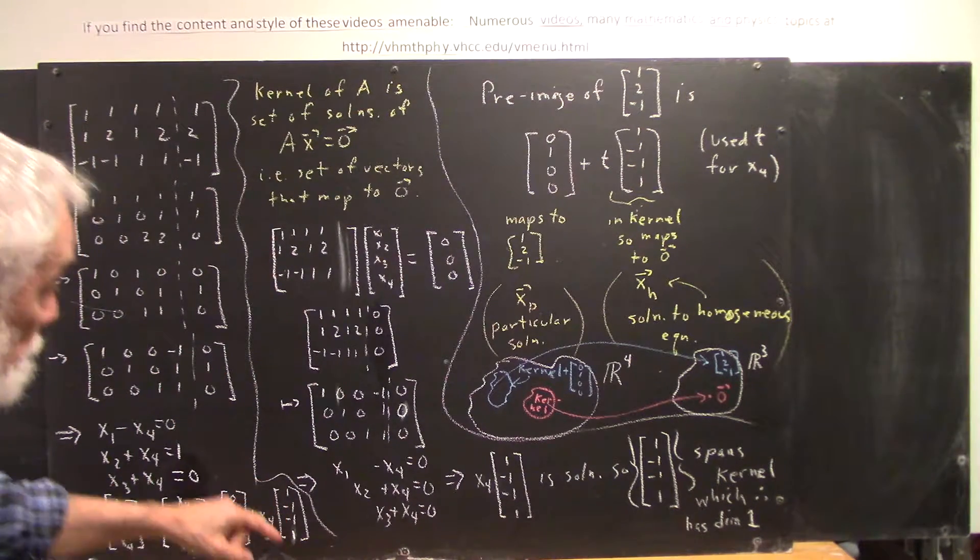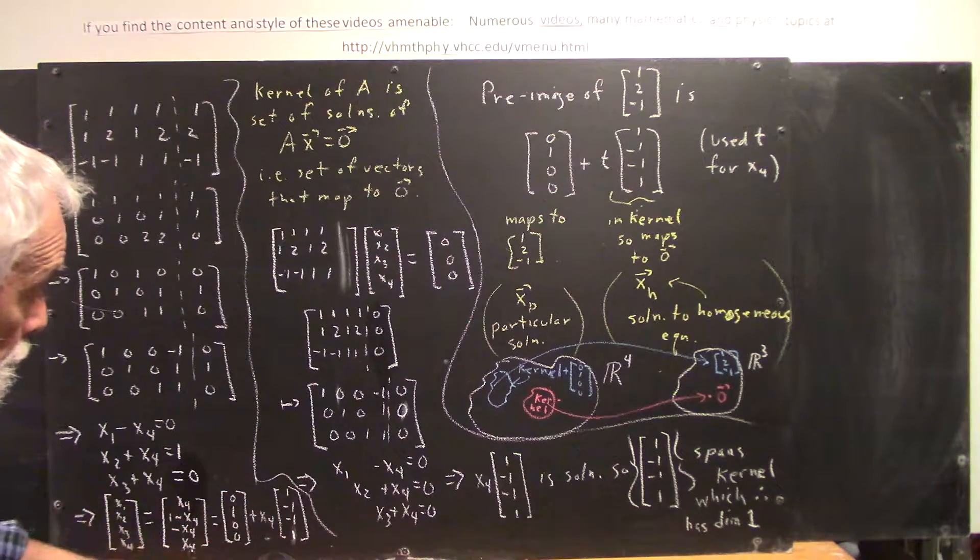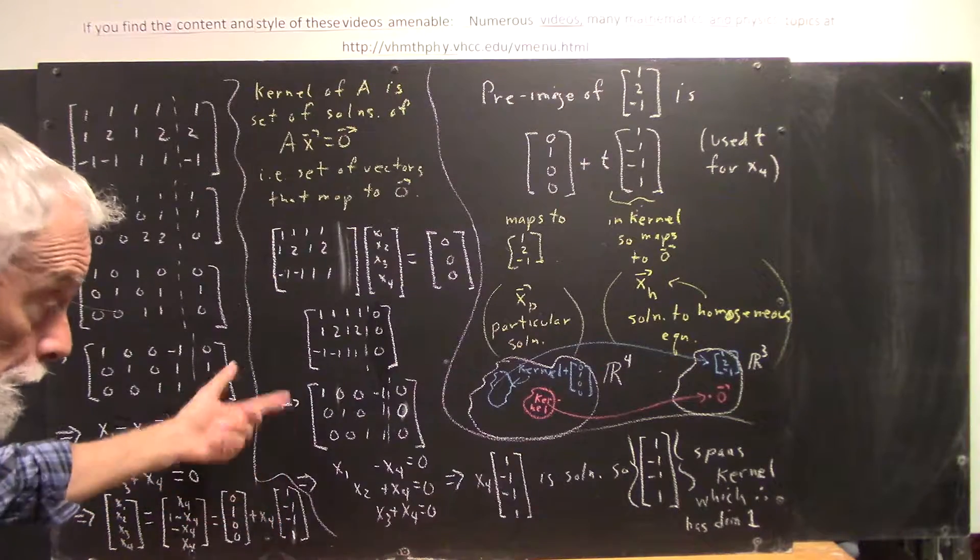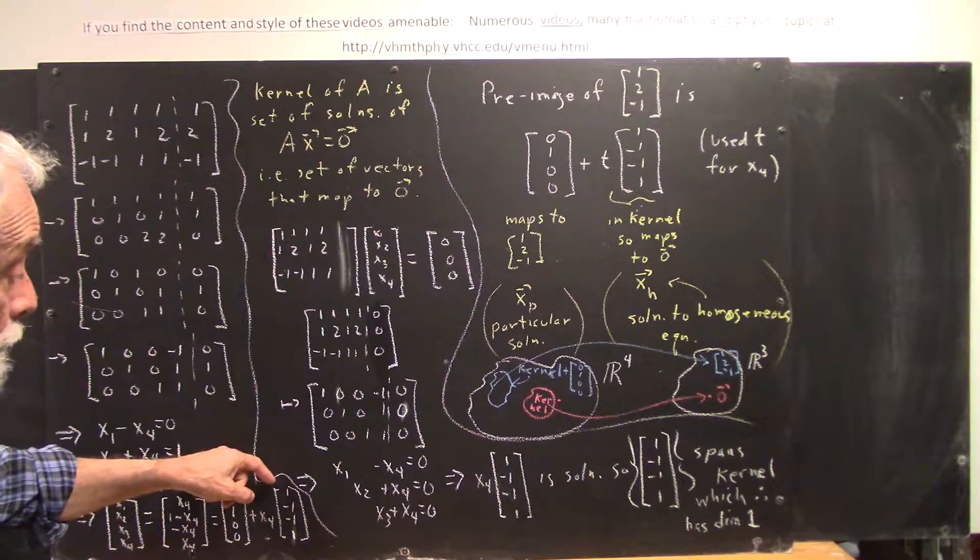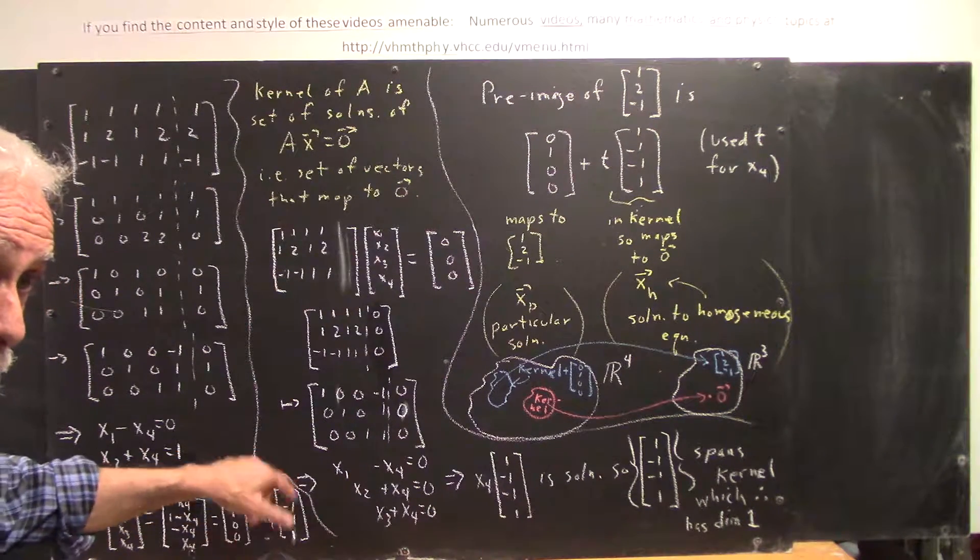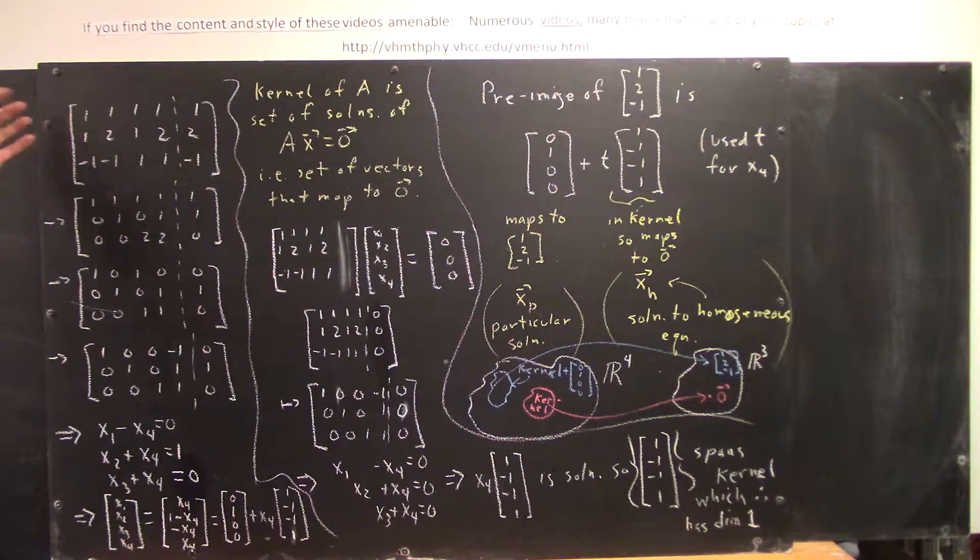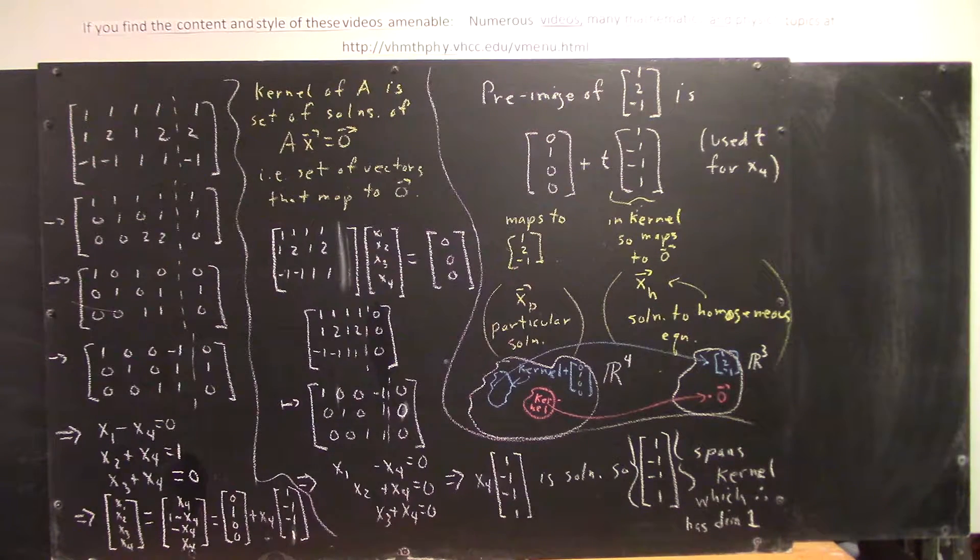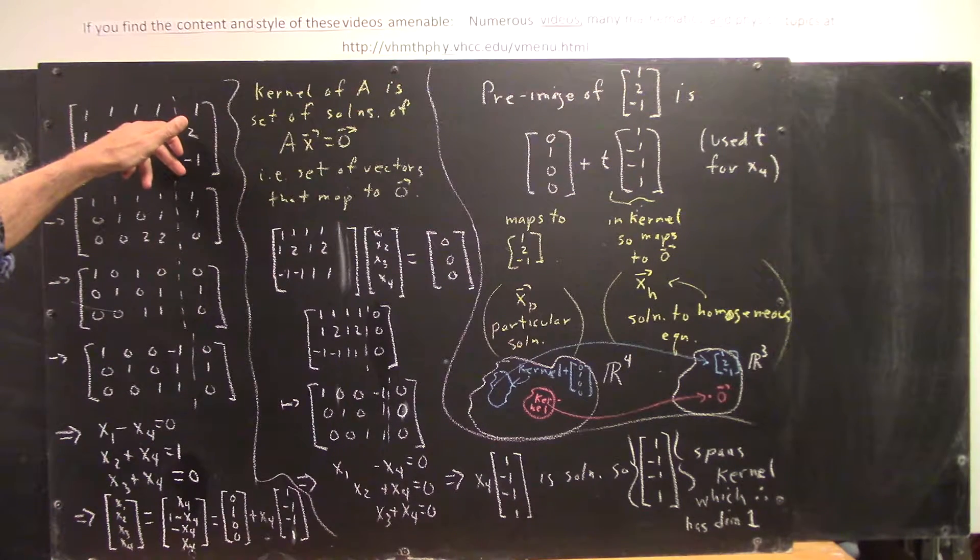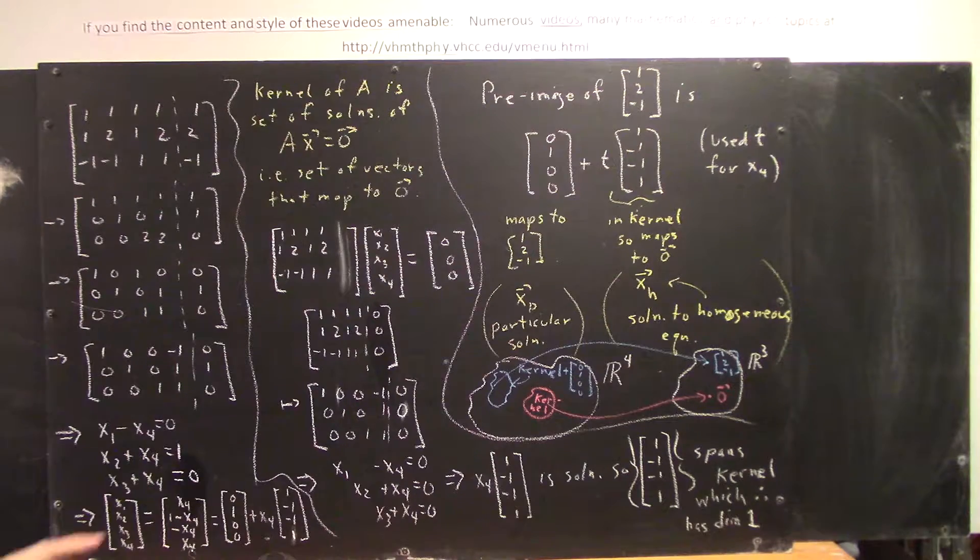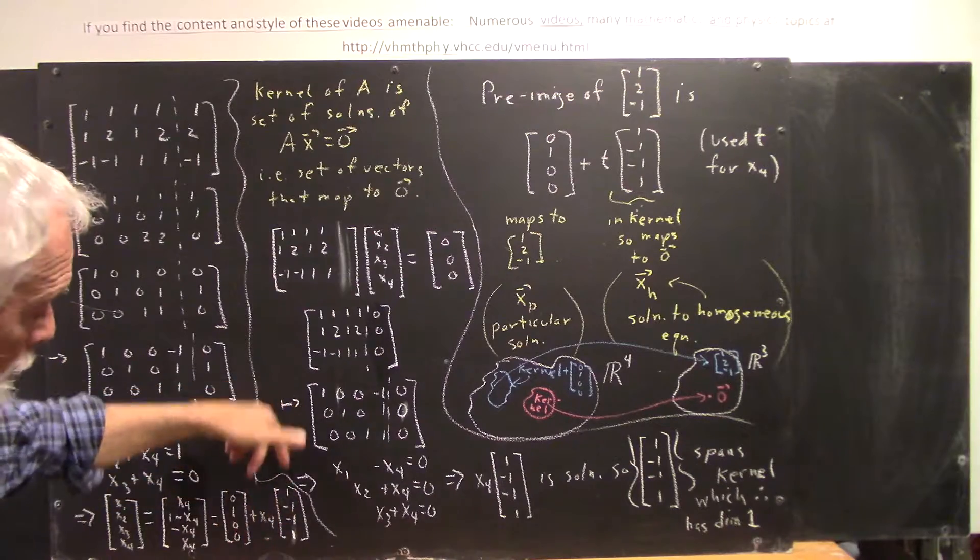Here's a vector in the null space, because this vector does map to 0, so that the null space is spanned by this vector. The set of all multiples of this vector, x4 could be anything, the set of all multiples of this vector forms the null space. To every vector in the null space, we add the vector 0, 1, 0, 0, which you can verify does map onto 1, 2, negative 1. And we get the set of all vectors that map onto 1, 2, negative 1.